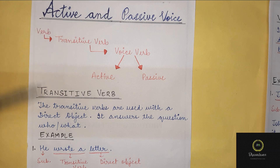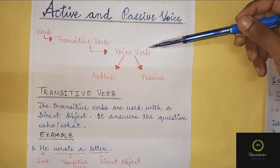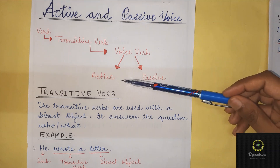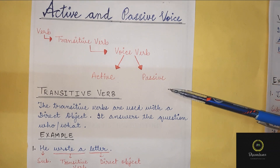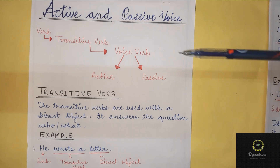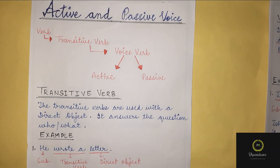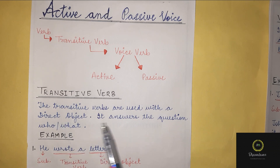Verb — transitive verb. Voice verb has two parts: active and passive. So it is very clear that voice verb is active and passive. That means, active and passive come from voice verb, which is a transitive verb. Transitive verbs are used with the direct object — that is, direct object ke saath. It answers the questions 'who' and 'what'.